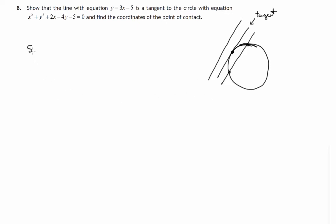So to do that we'll solve the system of equations y equals 3x minus 5 and x squared plus y squared plus 2x minus 4y minus 5 equals zero.